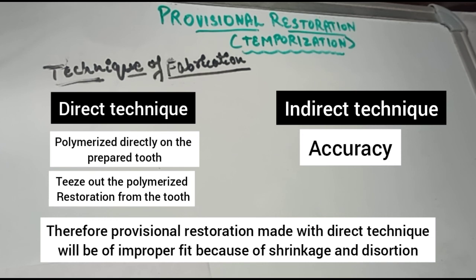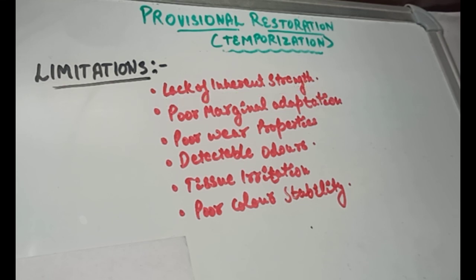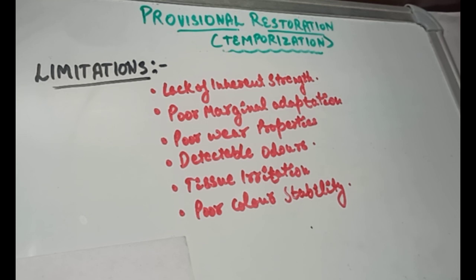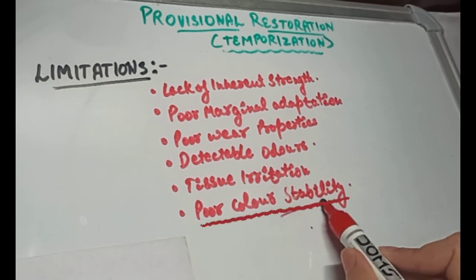Now let's see the limitations of a provisional restoration. First, there is lack of inherent strength — provisional restorations tend to fracture especially in long-span bridges and in patients with bruxism. There is also poor marginal adaptation and poor wear properties. Since the resins are porous, they absorb oral fluids and hence develop detectable odors. Poor tissue response may result in tissue irritation, and there is also poor color stability of the provisional restoration.